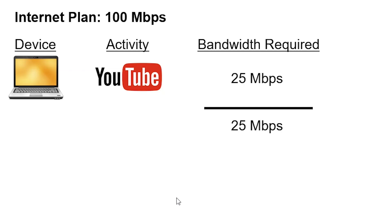Let's say you have an internet plan that provides 100 megabits per second of bandwidth, and you have one device — a laptop — in your home network. If you're on YouTube constantly streaming video, you need at least 25 megabits per second of bandwidth to have good internet performance. With 100 megabits per second of available bandwidth, you're only using 25 megabits per second. That additional 75 megabits per second doesn't improve your performance or do anything for your existing YouTube session — it's just bandwidth that's not being used.